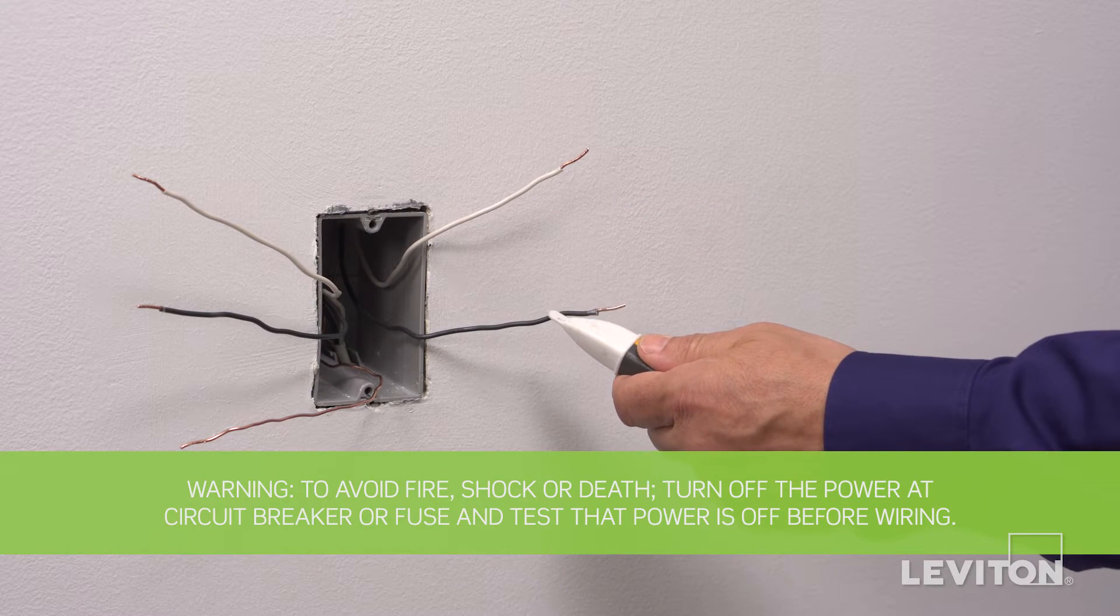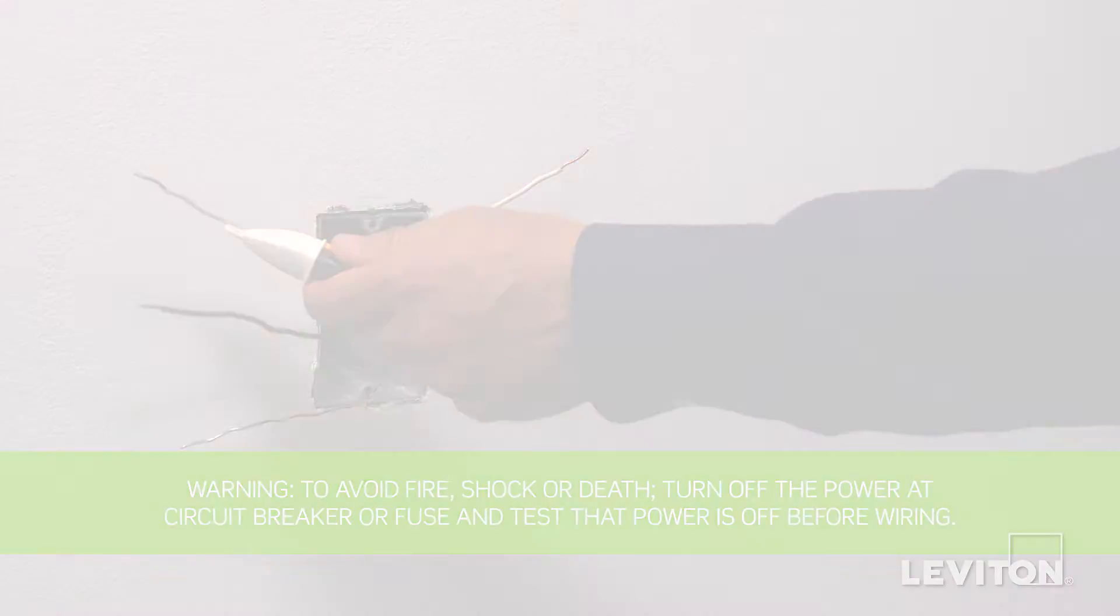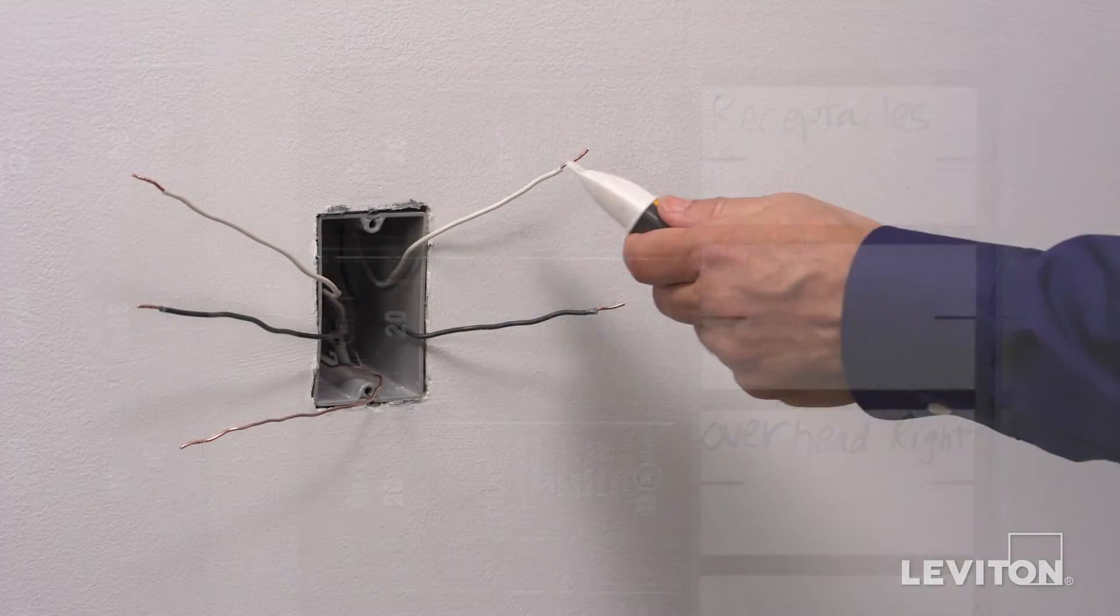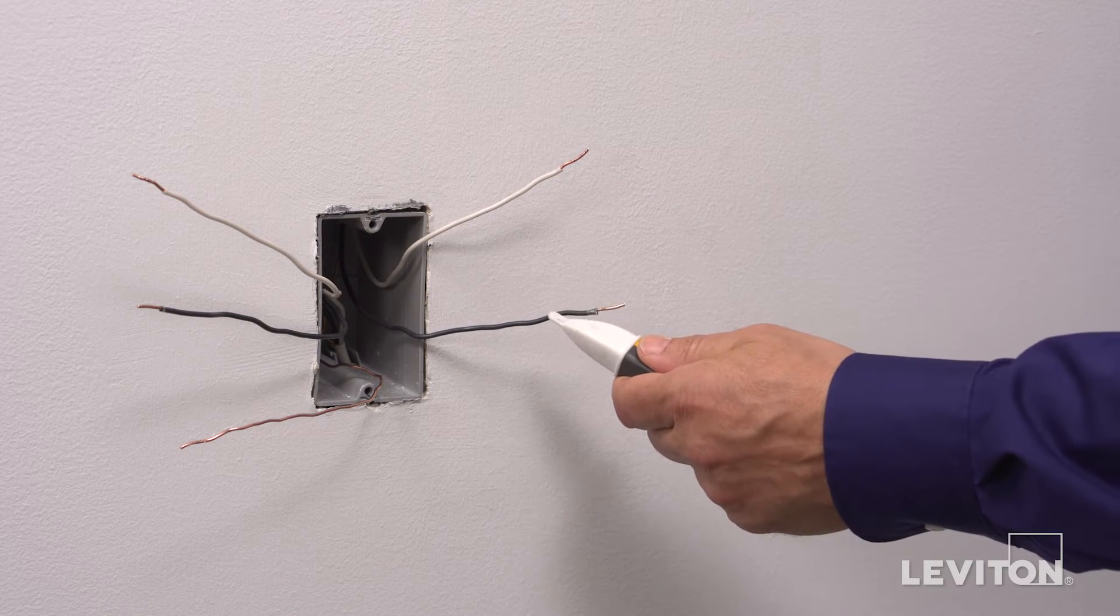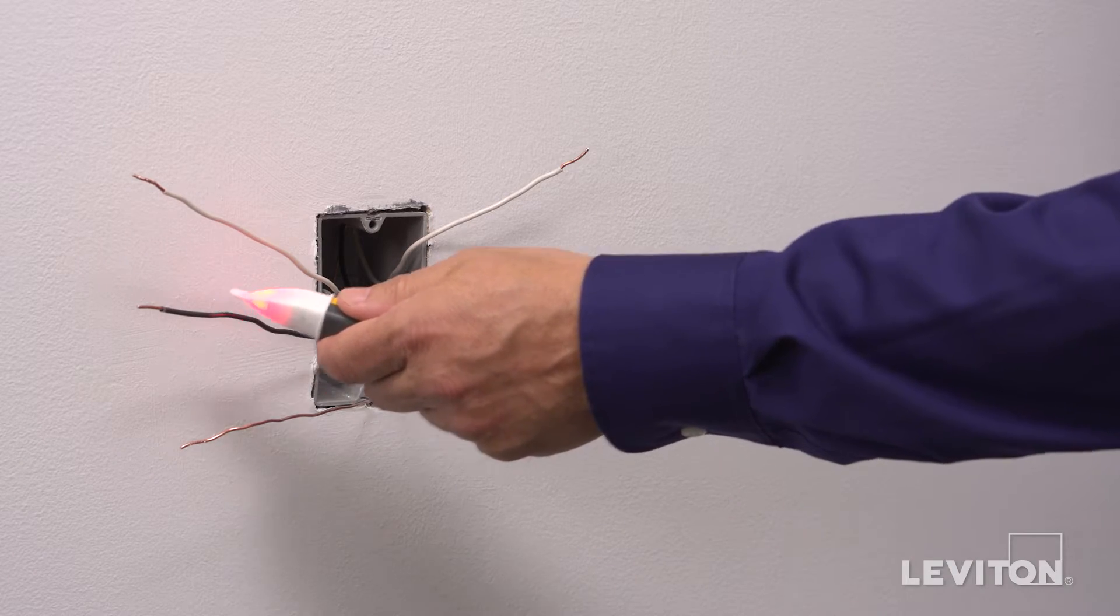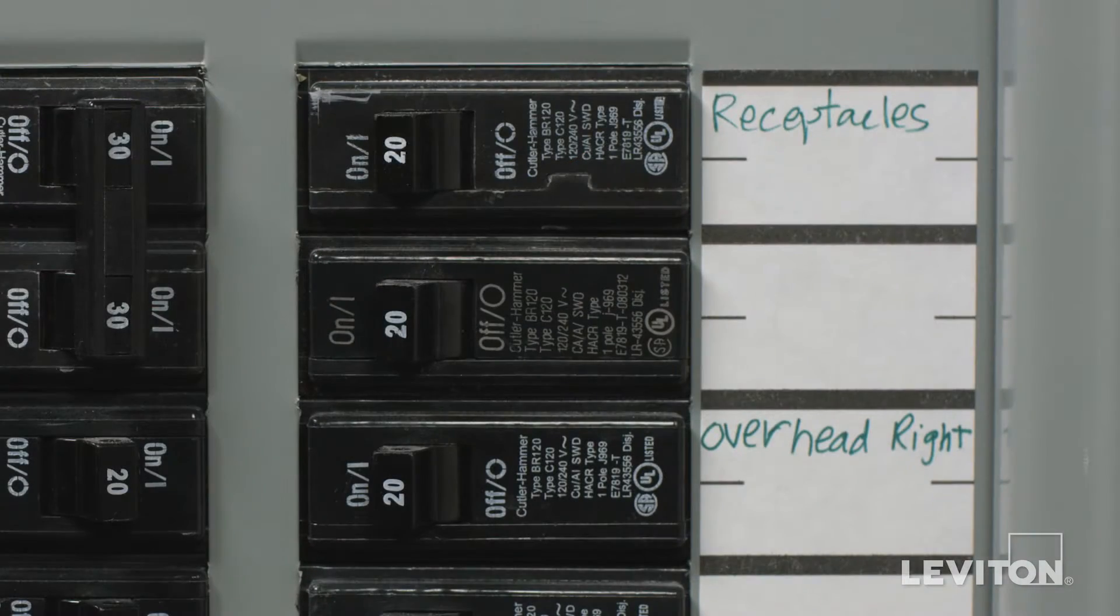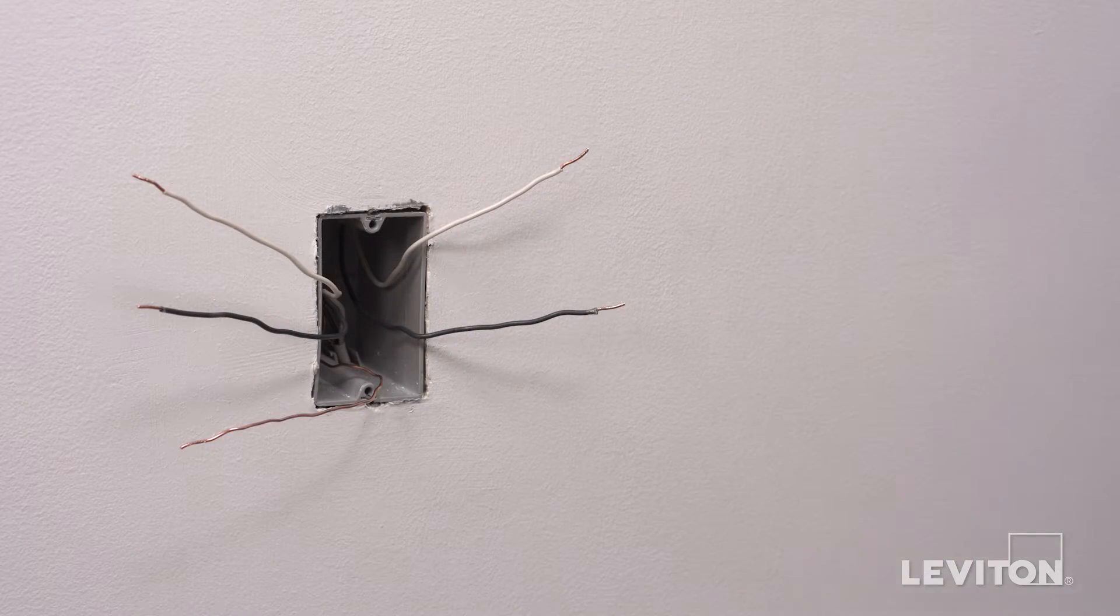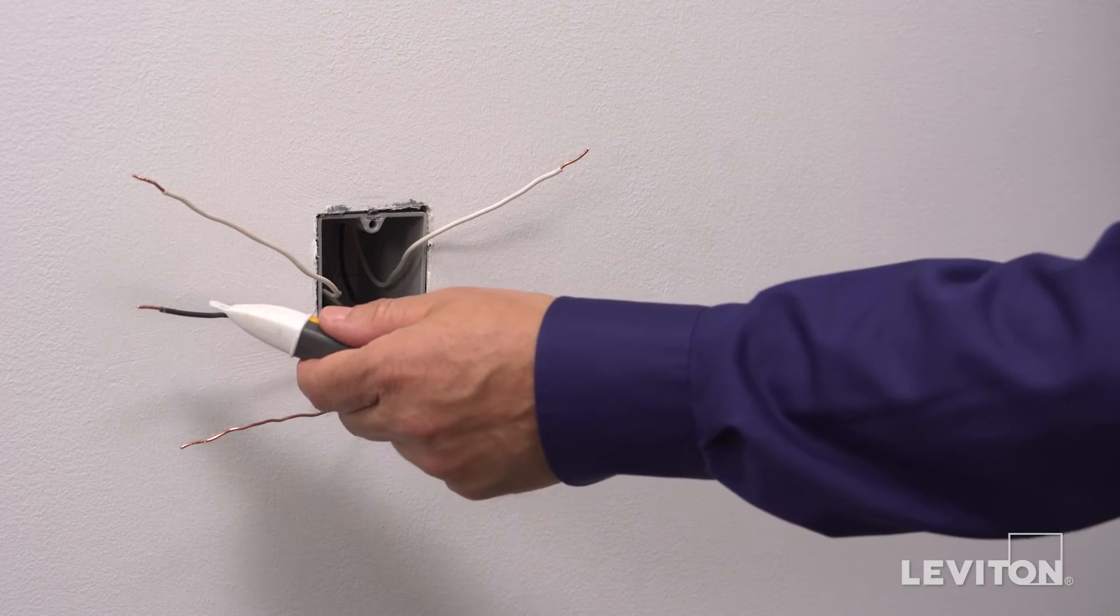Now, we need to identify the hot wire. To do this, turn the circuit breaker back on. Carefully use the voltage tester to test each wire. The hot wire will be indicated by the tester. Once identified, turn off the circuit breaker to shut power and test to ensure that the power is off.